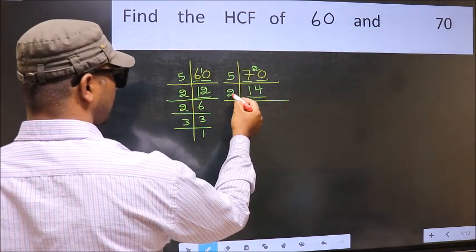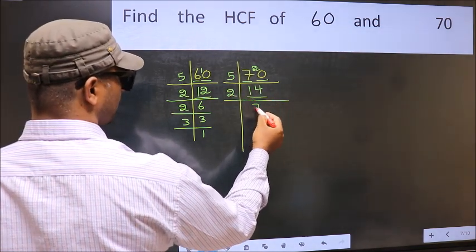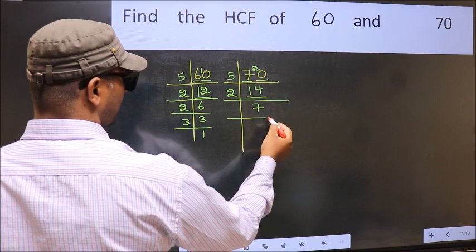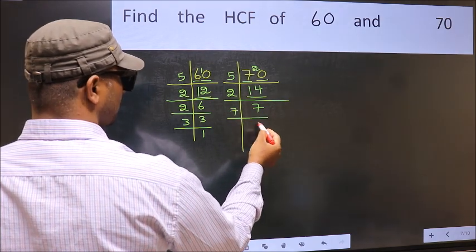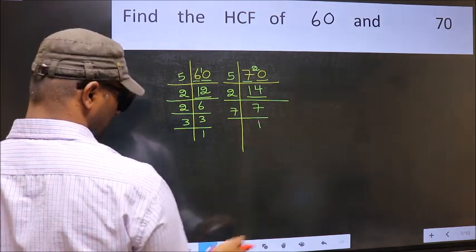Now 14 is 2 times 7, which equals 14. 7 is a prime number, so 7 once 7.